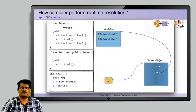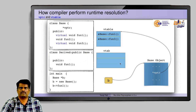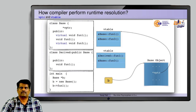For a derived class where function 1 is overridden, the compiler creates a separate vtable for the derived class. Function 1 is virtual and redefined in derived class, so the address from the derived class is stored. Function 3 is virtual but not overridden, so the same address from the base class is taken. That is the important difference to note.